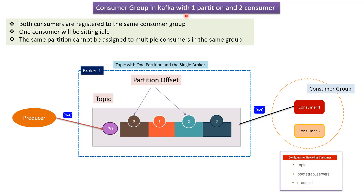This video tutorial explains consumer groups in Kafka with one partition and two consumers. The broker has one topic with only one partition, partition zero. The producer generates messages and publishes all messages to partition zero. In the consumer group, two consumers are registered, but only one consumer will consume messages from partition zero — the other will be idle, because the same partition cannot be assigned to multiple consumers in the same group.